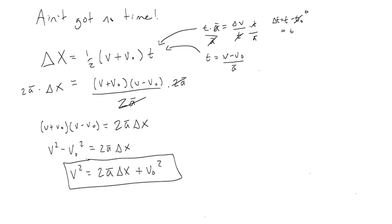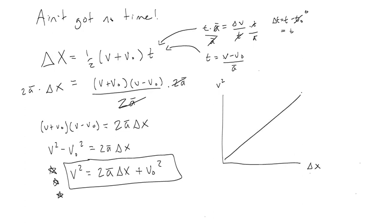This is the equation to use when you don't know time and want to skip finding it. The final velocity squared equals the initial velocity squared plus twice the average acceleration times the displacement. This corresponds to a linear relationship between velocity squared and displacement. Congratulations — you've done a great job, and I'm excited for you to use these equations.